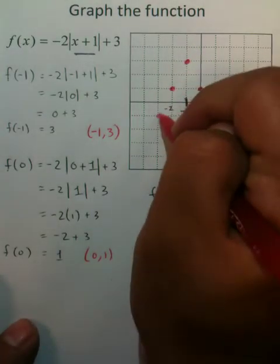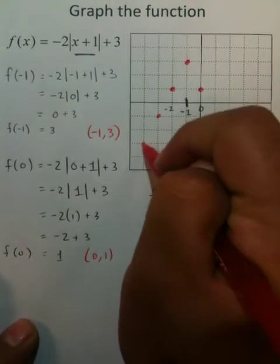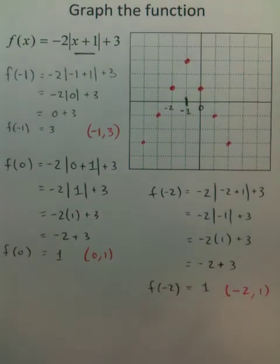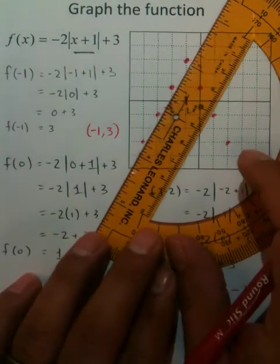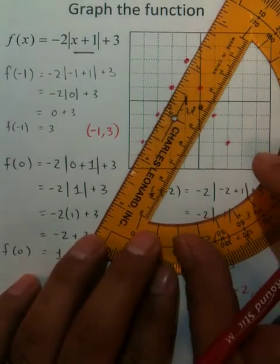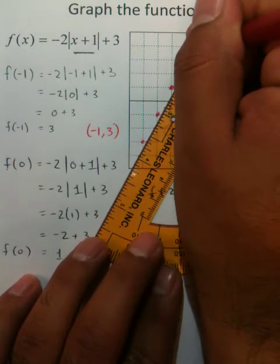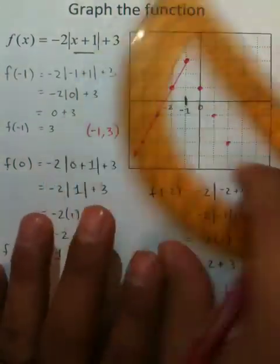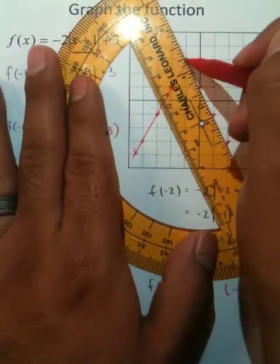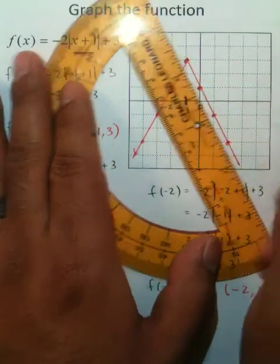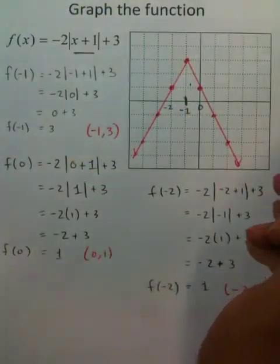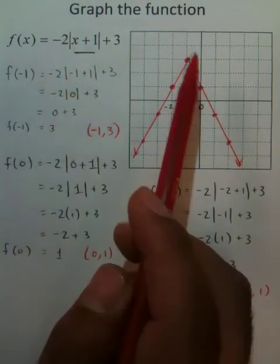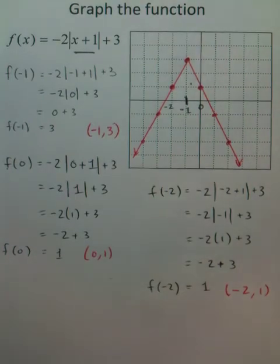You can keep doing this over and over — inputs, outputs, plugging numbers in. When you connect your dots you should be getting a V-shaped graph, because absolute value functions look like V shapes. This one is facing down because the coefficient was negative. If it had been positive, it would be facing up. That's how easy it is to graph this.